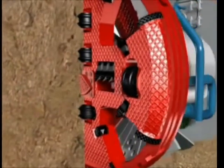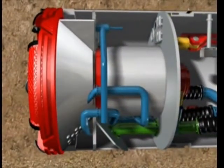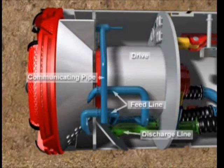In mixed shield mode, the chamber behind the crusher cone is flooded with bentonite. In this mode, pressure compensation with the crusher chamber takes place via the communication pipe. The slurry and feed lines run through this chamber.